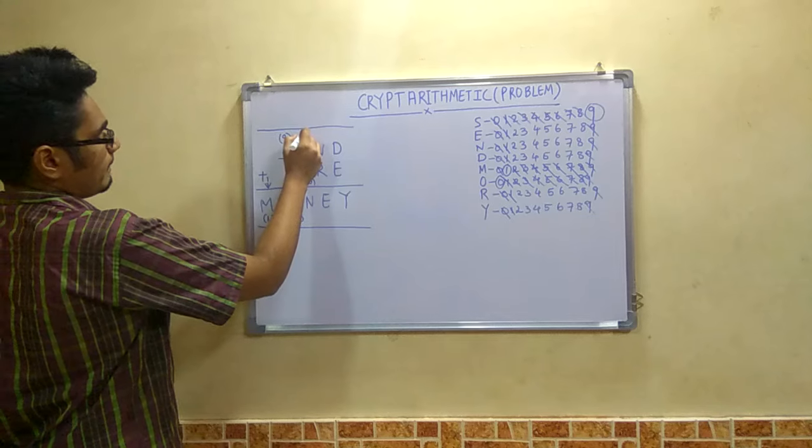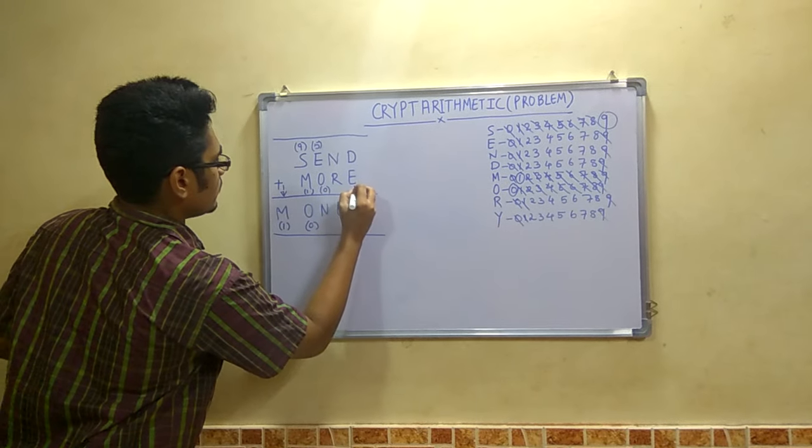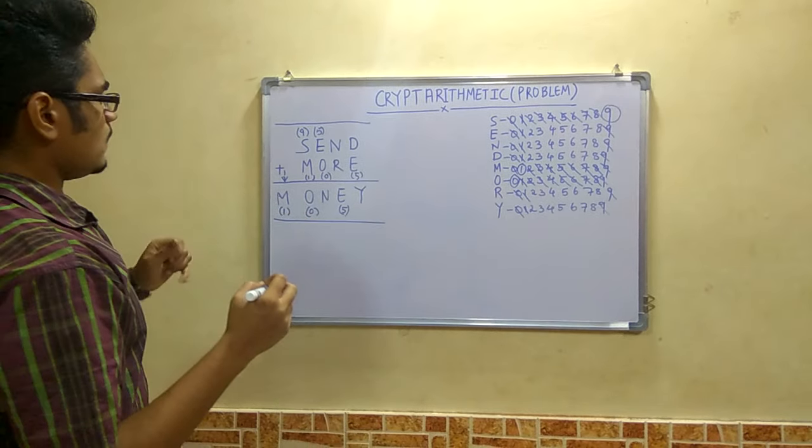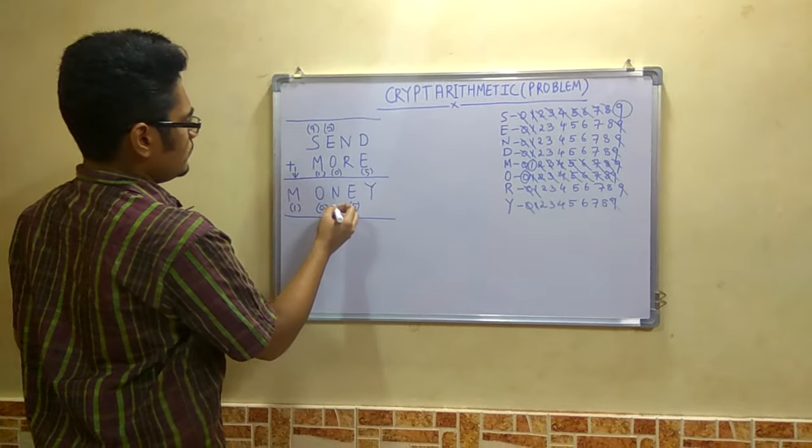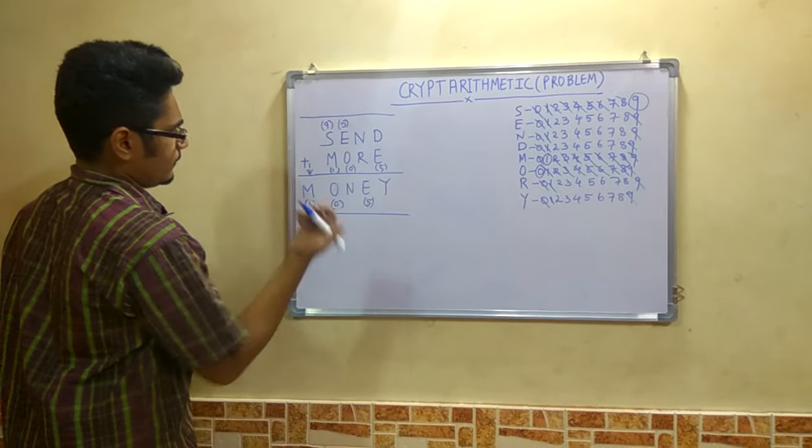And you can assign 5 here also. And so here E is 5. Now this value should be something else. Now 5 plus 0 cannot be 5. So E cannot be 5, N cannot be 5. Now for this you will add a carry here. Means 5 plus 1 is 6. So N should be 6 here.